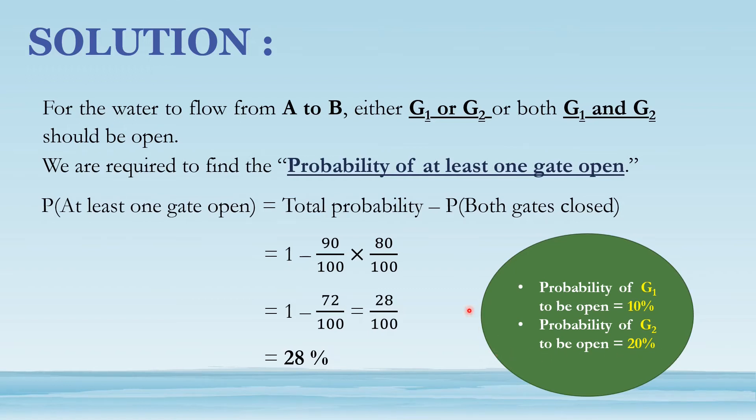Substituting these values we get probability of at least one gate open equals 1 minus 90 by 100 into 80 by 100. This equals 28 by 100. So we can say that probability of at least one gate open equals 28%.